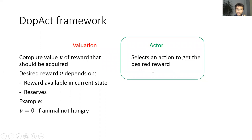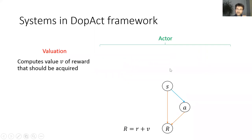I will describe the computations the actor performs, how this computation is implemented in the circuit. The actor selects actions by inference in a probabilistic model describing the relationship between states S, actions A, and rewards R. Capital R denotes total reward, which includes both the immediate reward r and the reward expected in the future V. In this DOPACT framework, there are two systems within the actor which learn different parts of this probabilistic model. The system shown in orange learns how reward depends on actions performed in a particular state, and I will refer to it as the goal-directed system.